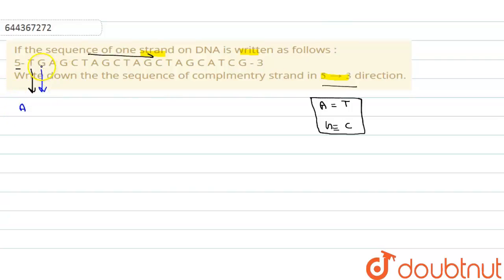The second one is G, so complement of G is C. Then A becomes T, G becomes C, C becomes G, T becomes A, continuing through the entire sequence: ACTCGATCGATCGATCGTAGC.